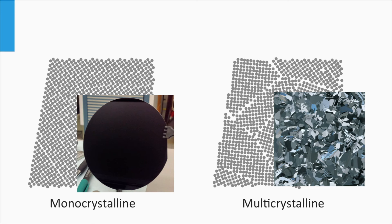Here you see pictures of monocrystalline and multicrystalline wafers. A monocrystalline silicon wafer has one uniform color, whereas in multicrystalline silicon the various grains are clearly visible to the human eye. At the grain boundaries, we find lattice mismatches, and as a result many defects reside there. Consequently, the lifetime of charge carriers in polycrystalline silicon is shorter than in monocrystalline silicon due to Shockley-Reed-Hall recombination. The more grain boundaries in the material, the shorter the lifetime of the charge carriers, meaning grain size plays a role as well.